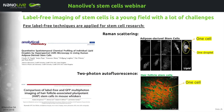The new generation of label-free imaging techniques are slowly being applied to stem cells, so this is a very young field with a lot of challenges. These techniques are mostly Raman scattering, which under its various forms is very good at looking at lipid species within single cells, and 2-photon autofluorescence, which is very good at looking in situ at populations of cells.